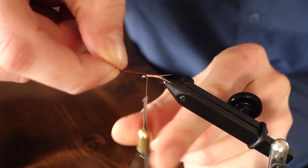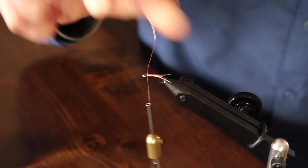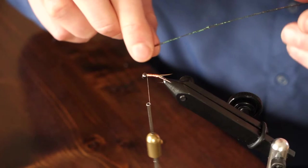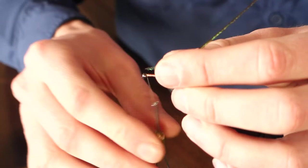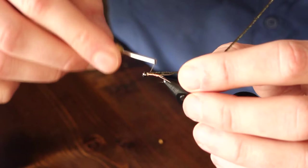Once you've helicoptered the wire off, we're going to tie in one strand of peacock hurl. I'm going to break off the bottom portion, the brittle end of it, and then tie that in right behind the bead. We're going to work our thread back about an eighth of an inch. This is going to be our tie-in point for our rubber legs.